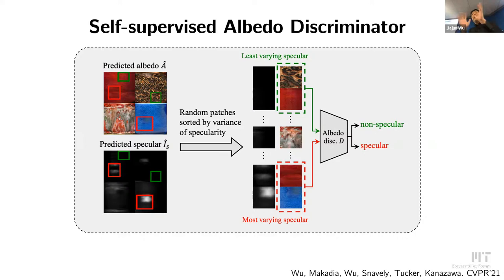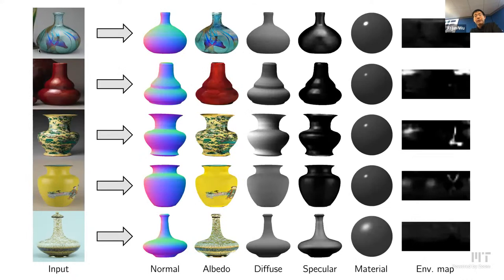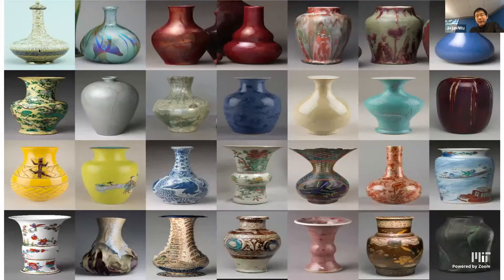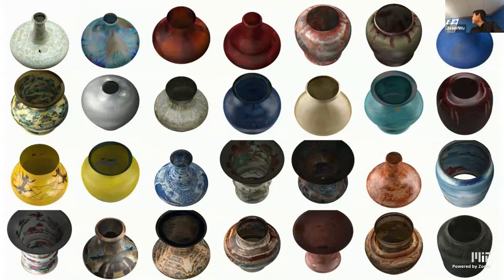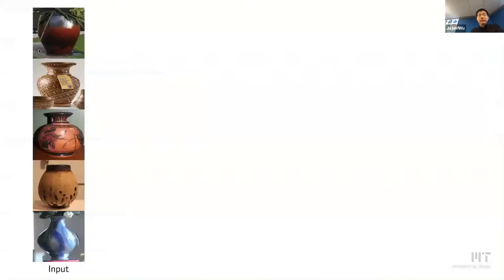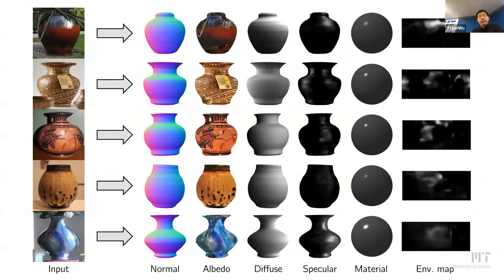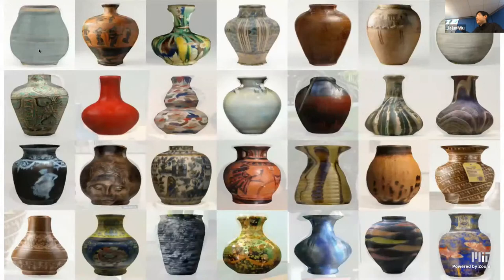Putting everything together, going from a single image of a vase, you can decompose it into surface normals, albedo, and all these intrinsic image components. And once you have that information, going from a single image, you can virtualize it — see it from different views — and relight it. You can do the same for a more challenging dataset with more complex backgrounds, different from the training data — intrinsic image decomposition as well as novel view synthesis, seeing objects from different views, and relighting. Some of these images are paintings but it still works pretty well.